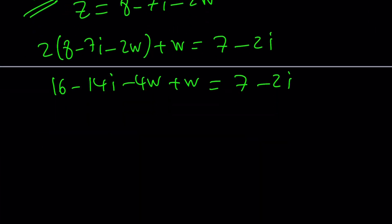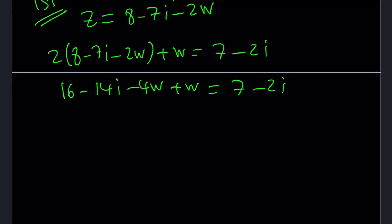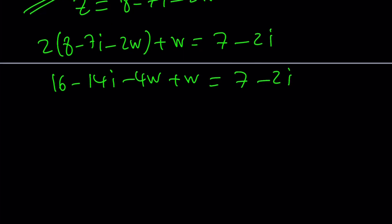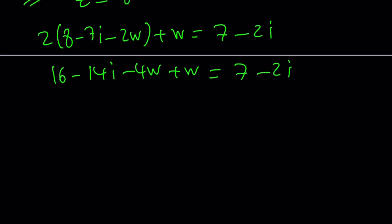2 times 8 is 16 minus 14i minus 4w plus 1w equals 7 minus 2i. We kind of have two complex numbers equal to each other. But we're not going to do real parts versus imaginary parts because w is not a real number. So we can't really distinguish between the real and imaginary parts unless we do something which we're going to talk about later. We're going to add these up. That's going to give us negative 3w plus 16 minus 14i equals 7 minus 2i. And then I'm going to subtract 16 and add 14i so that I can isolate negative 3w.